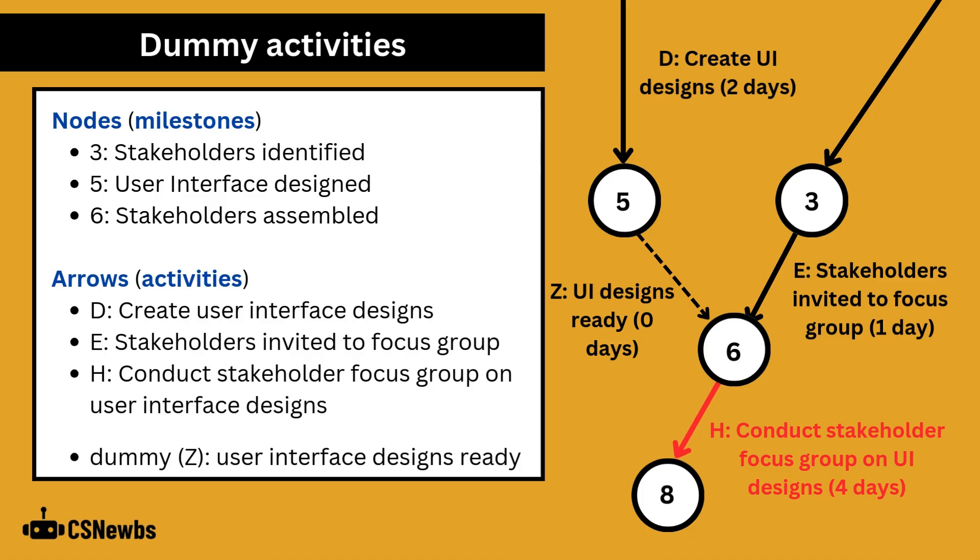Let's work backwards. Activity H is conducting a stakeholder focus group on the user interface designs but this can't be done until the stakeholders have been invited to the focus group which is activity E and is a direct dependency but we can't show the stakeholders the designs until they have been created which is activity D and takes us to milestone 5.